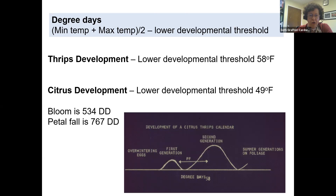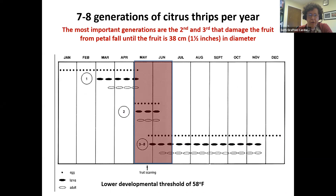There are seven to eight generations of citrus thrips per year. The most important are the second and third generations — these are the ones damaging small fruit that has a really tender rind. This damage occurs from petal fall until the fruit is about one and a half inches in diameter. Generation one is kind of before petal fall, generation two occurs at or after petal fall, and generations three through eight occur after that. The second and third generations are the most important in terms of damaging fruit.